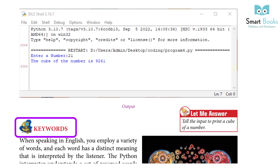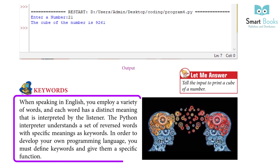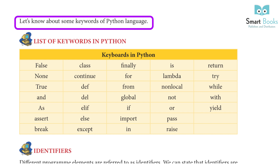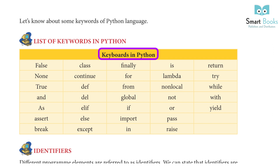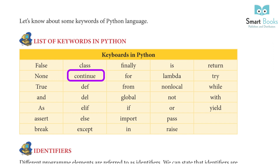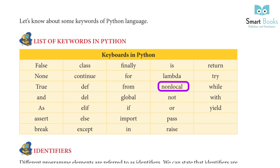Keywords: When speaking in English, you employ a variety of words and each word has a distinct meaning interpreted by a listener. The Python interpreter understands a set of reserved words with specific meanings as keywords. To develop your own programming language, you must define keywords and give them a specific function. Some keywords in Python include: False, class, finally, is, None, continue, for, lambda, try, True, def, from, nonlocal, while, and, del, global, not, with, as, if, or, and more.